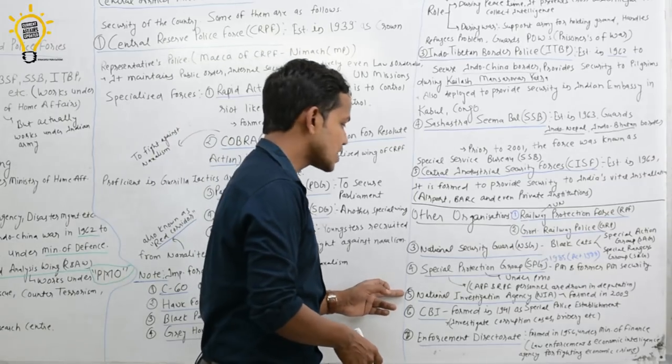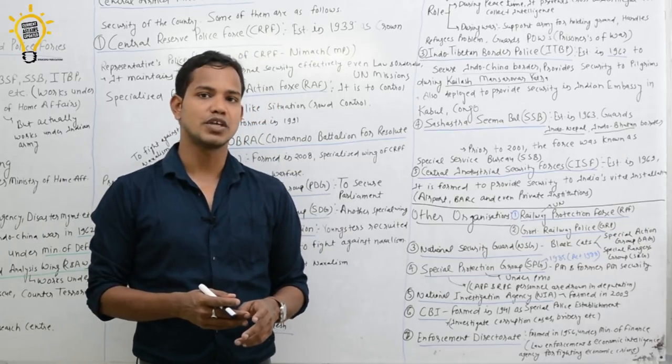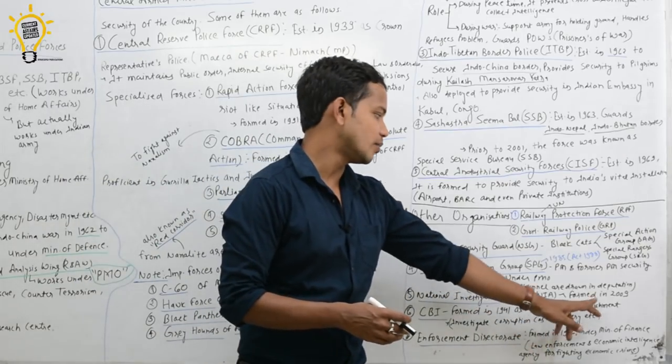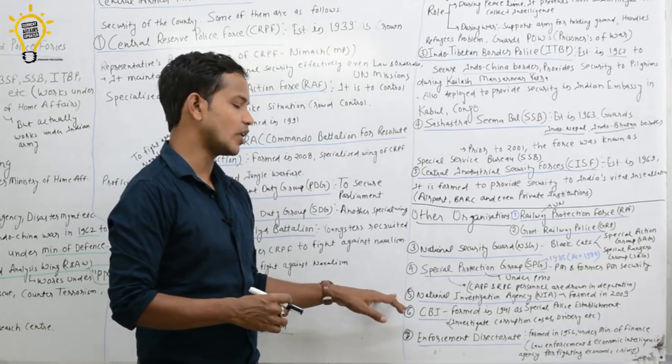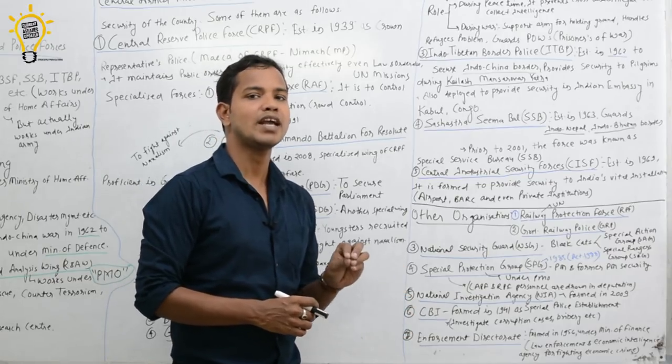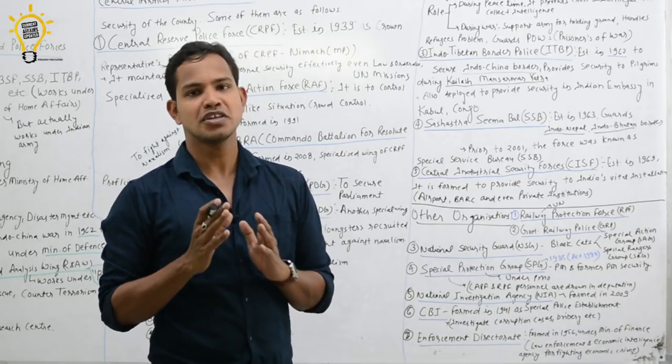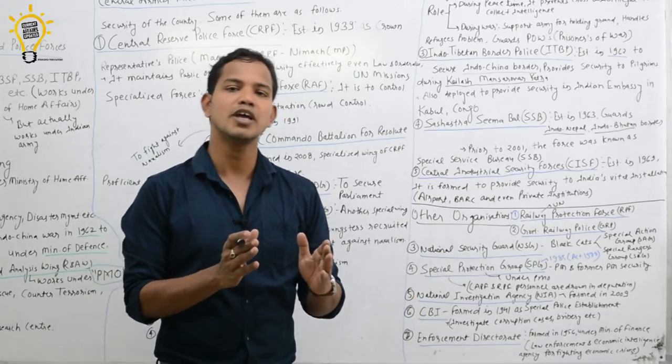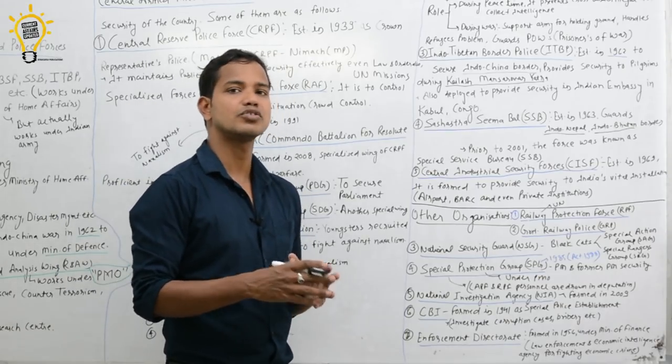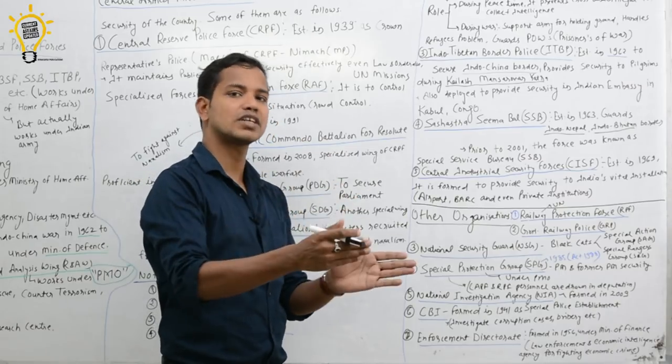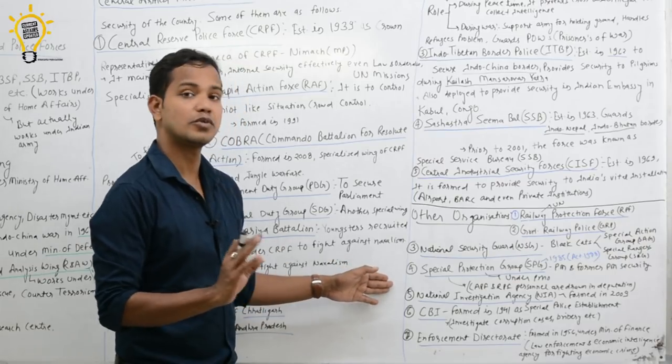Next comes National Investigation Agency, NIA. NIA was formed after Mumbai bomb blast, in 2009, after 2008. Now what is the basic question about NIA? NIA's main task is to control terror activities. NIA never needs to take permission from any state government. If unfortunately an incident has happened in your state, for example, bomb attack, terror activities, so NIA can enter your state without state government's permission and can start investigation. This is what NIA is.